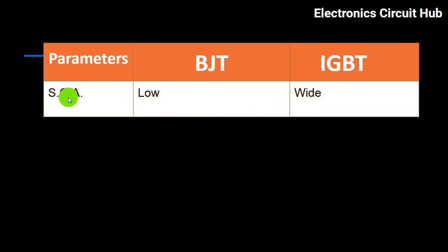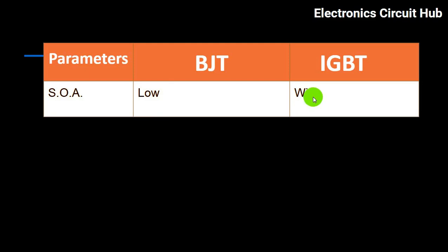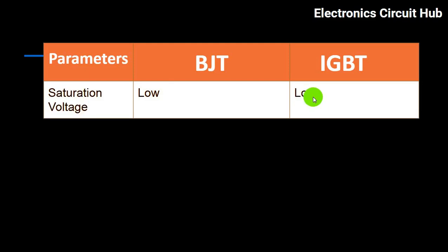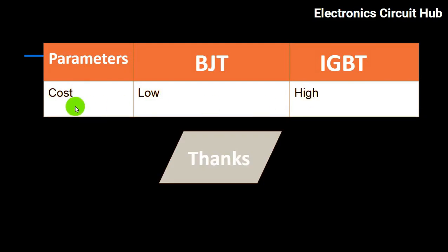For safe operating area, that is SOA: BJT is low, IGBT is wide. For saturation voltage: both BJT and IGBT are low. For cost: BJT is low, IGBT is high.